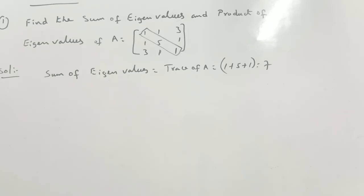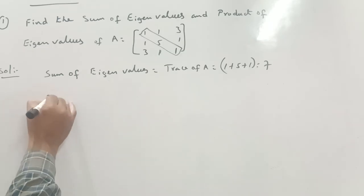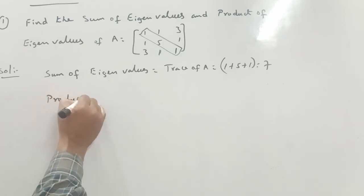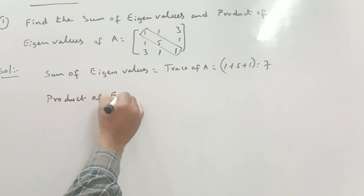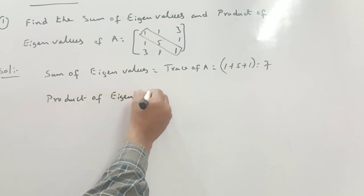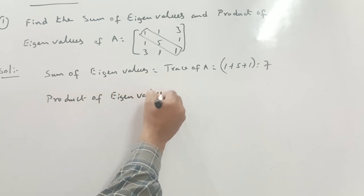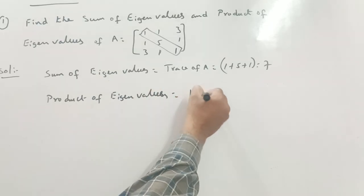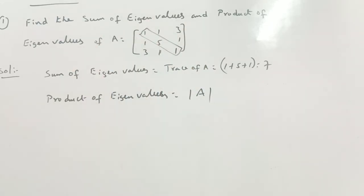Then we have to find the product of eigenvalues. The product of eigenvalues is nothing but the determinant of A.